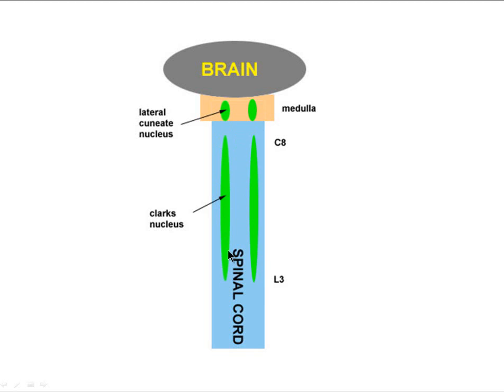In reality, from L3 to C8 it's Clark's nucleus, and up in the medulla it's the lateral cuneate nucleus. They serve the same function — sampling information from muscle spindles and Golgi tendon organs about unconscious proprioception.